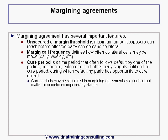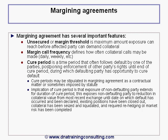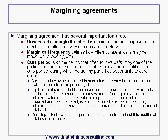Cure periods may be stipulated in the margining agreement, as a contractual matter, or sometimes are imposed by statute. The implication of any cure period is that the exposure of the non-defaulting party lengthens for the duration of the cure period. In effect, this exposes the non-defaulting party to a reduction in the value of the collateral from the most recent exchange until the date on which the default has occurred and been declared, the existing positions have been closed out, collateral has been seized and liquidated, and any required rehedging of market risk has been completed. Modeling the risk of margining agreements must therefore reflect this additional risk.